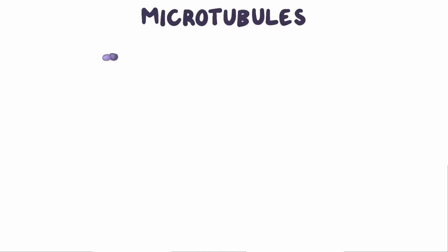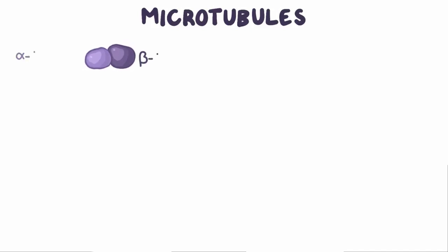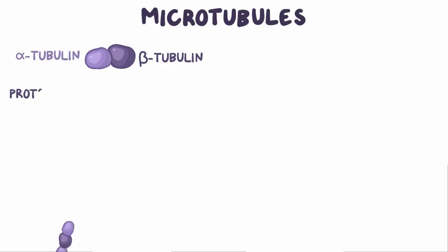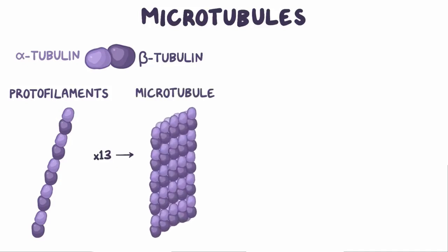Next are the microtubules, which are the thickest and largest of the protein structures in the cytoskeleton. Microtubules are made of alternating round proteins called alpha and beta tubulins, which form long strands called protofilaments. Thirteen of these protofilaments come together to form a single microtubule.